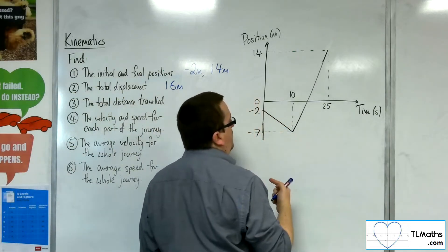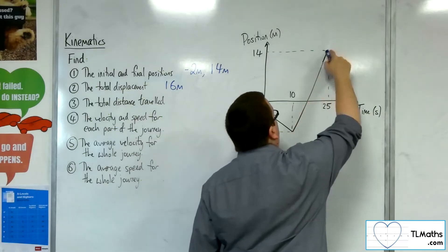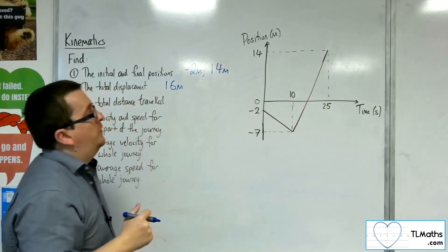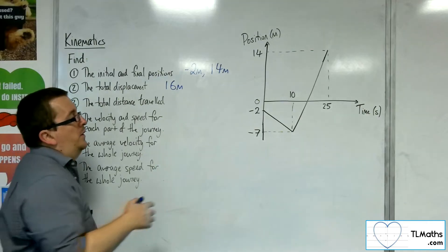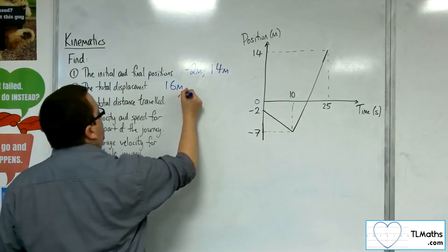I'm now 7 metres away from the origin. From the 7 metre mark up to the 14 metre mark, I must have travelled 21 metres. So 5 plus 21 makes 26 metres.